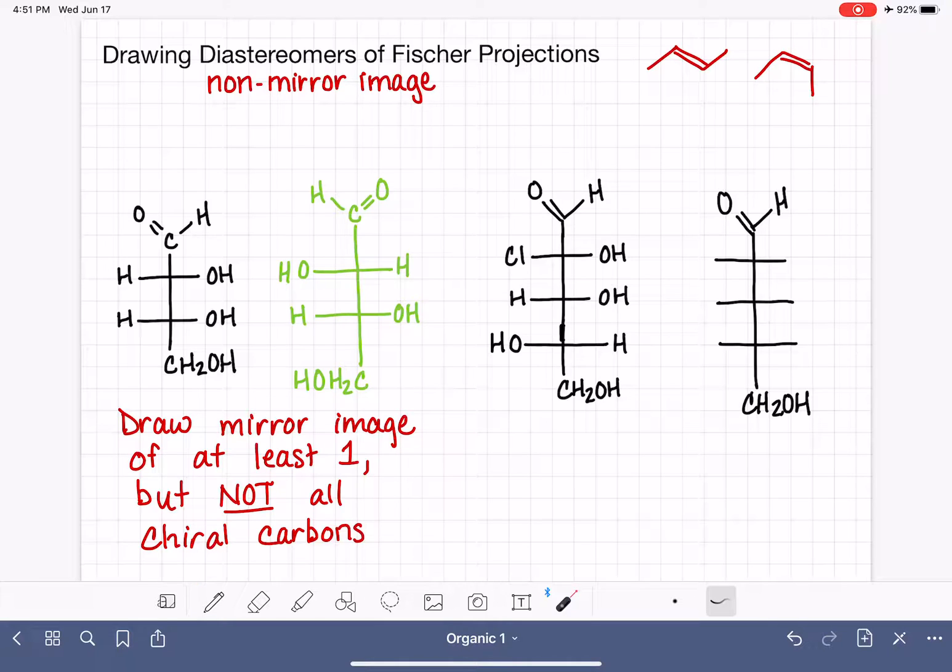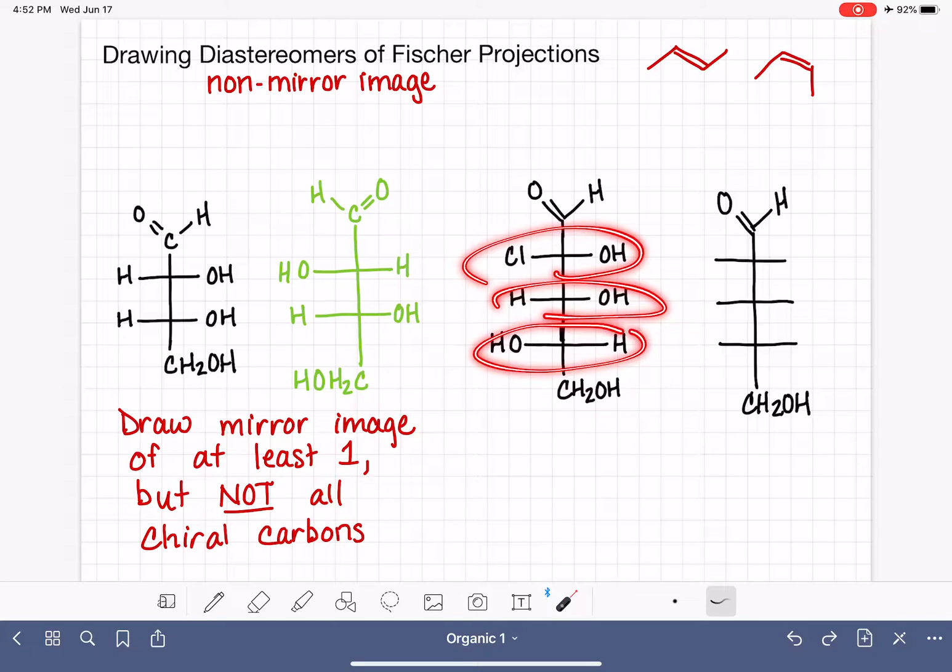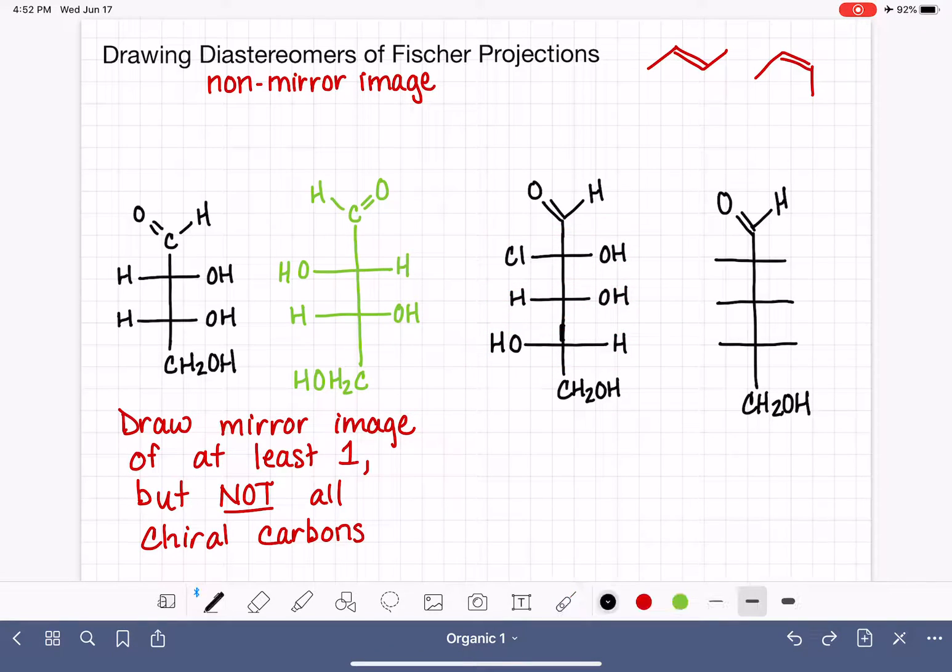So in this situation, we've got to pick at least one of our chiral carbons to draw the mirror image. At least one of them has to be drawn as a mirror image. And it does not matter which one we choose. It doesn't make any difference at all. So I'll choose the one in the middle. I'm going to make that guy be the mirror image. We have to also choose at least one of them to be left alone. One of them cannot be mirrored. So I'll choose this one on top. I'll make this guy not a mirror image. So it's identical.